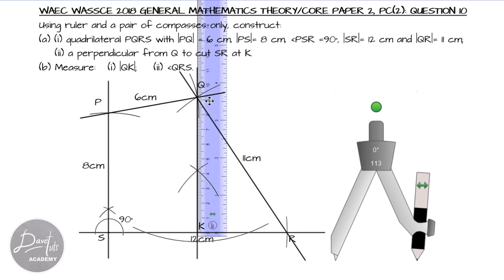That will be 9.2 centimeters. So, we can input our values as requested, that the line QK is giving us a measurement of 9.2 centimeters. And then, we also have to find the angle QRS.